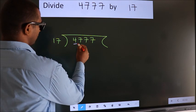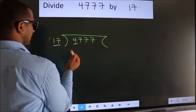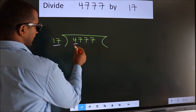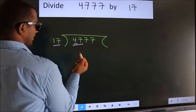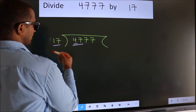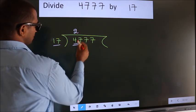Here we have 4. Here 17. 4 is smaller than 17, so we should take 2 numbers: 47. A number close to 47 in the 17 table is 17 times 2, which is 34.